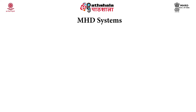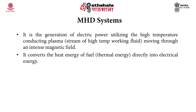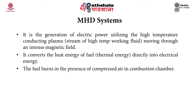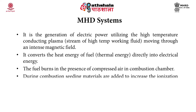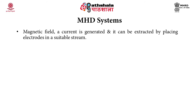MHD systems generate electric power utilizing high-temperature conducting plasma — a stream of high-temperature working fluid — moving through an intense magnetic field, converting thermal energy of fuel directly into electrical energy. The fuel burns in the presence of compressed air in a combustion chamber. During combustion, seeding materials are added to increase ionization, and the ionized gas is made to expand through a nozzle into the generator, where a current is generated and extracted by placing electrodes in a suitable stream.